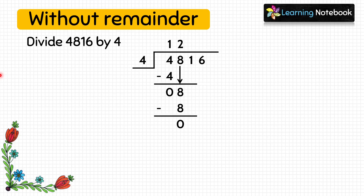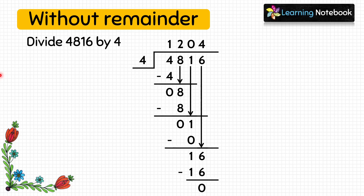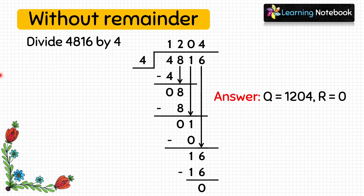Now copy the next digit 1, which is smaller than divisor 4, so we cannot divide it. We need to copy the next digit, but we cannot copy 2 digits at the same step since we have already copied 1 here. So we do 4 into 0 equals 0, and 1 minus 0 equals 1. Now we can copy the next digit 6, so we divide 16 by 4. 4 into 4 equals 16, and 16 minus 16 equals 0. The answer is quotient equals 1204 and remainder equals 0.